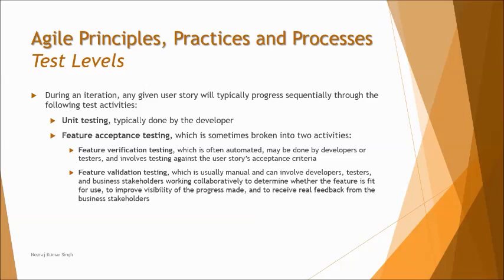On the other side, when you talk about testers, we have feature acceptance testing, broadly categorized into feature verification testing and feature validation testing. Verification, as we know from traditional ISTQB foundation, is done by developers to make sure that what they have built is correct — a first round of check to ensure it meets the acceptance criteria of the user story. After verification, the second round is validation testing, where the test-development team, together with developers and stakeholders, works on meeting the acceptance criteria and determining the definition of done for that particular user story.